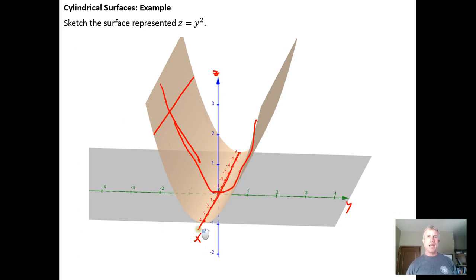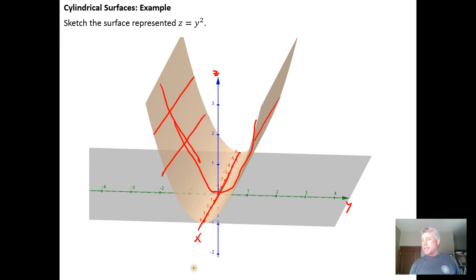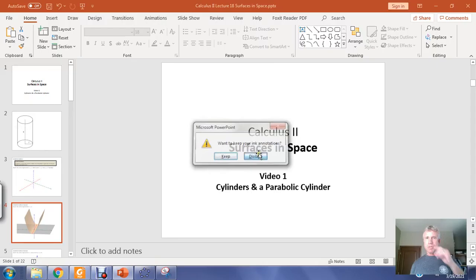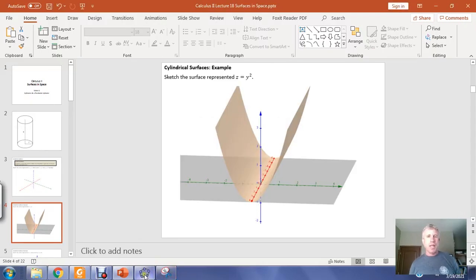There are infinitely many lines parallel to the line I drew, and you extend the parabola out along the X axis — parallel to the X axis — and you get that parabolic cylinder.